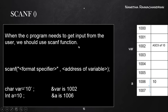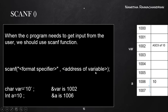The printf function is used for displaying something to the output screen. Similarly, the scanf function is used for getting something from the input devices, commonly from the keyboard. The syntax for scanf is: inside the parentheses, specify the format specifier or format string, then put a comma, then specify the address of the variable to which the value needs to be stored after receiving from the input device.